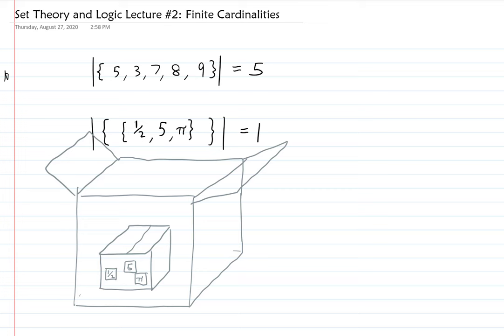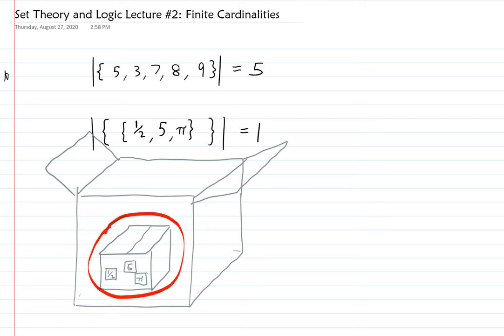The cardinality of the inner set — the set containing one-half, five, and pi — is three, because if you opened that little box you'd see three things. But that little set is the only thing in the big set, so the cardinality of the big set is one. The box analogy will help you through any difficulty with cardinality as long as there aren't infinitely many elements.